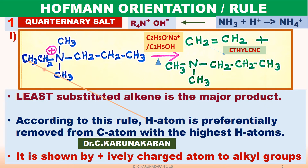According to this rule, in Zaitsev's rule, hydrogen atom is removed from the carbon atom with the least hydrogen atoms. Here in Hoffman rule, hydrogen atom is preferentially eliminated from the carbon atom with the highest number of hydrogen atoms. Hoffman orientation is exhibited by compounds with a positively charged atom connected to alkyl groups.